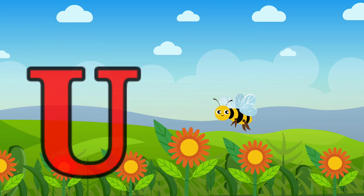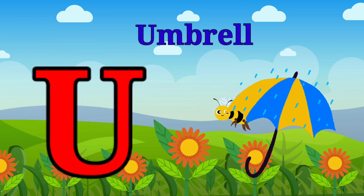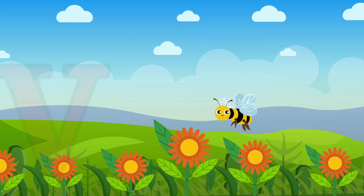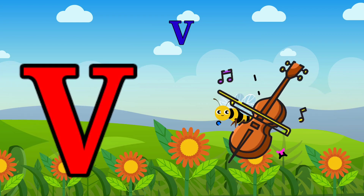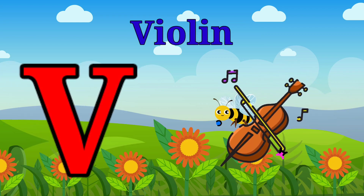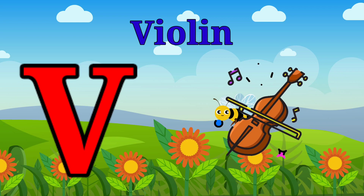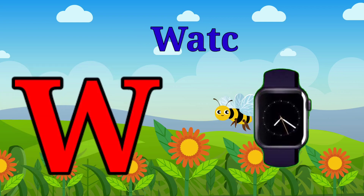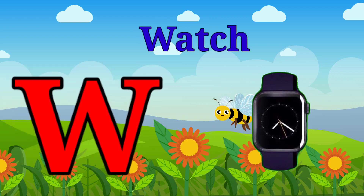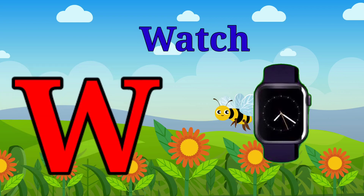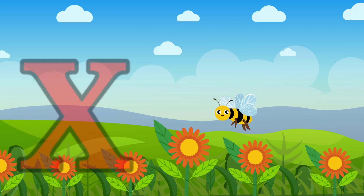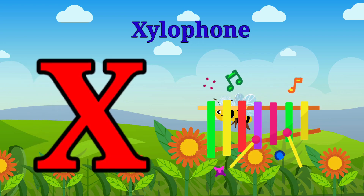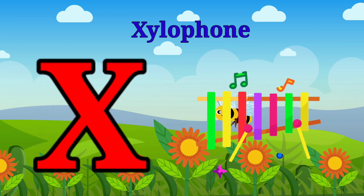U is for umbrella, u-u-umbrella. V is for violin, v-v-violin. W is for watch, w-w-watch. X is for xylophone, z-z-xylophone.